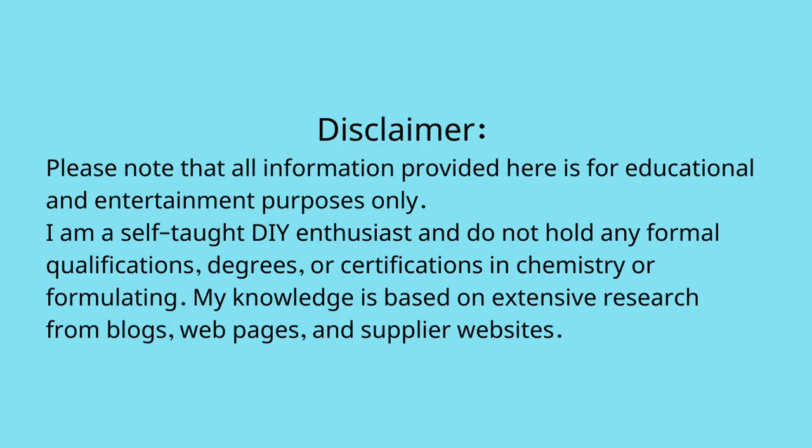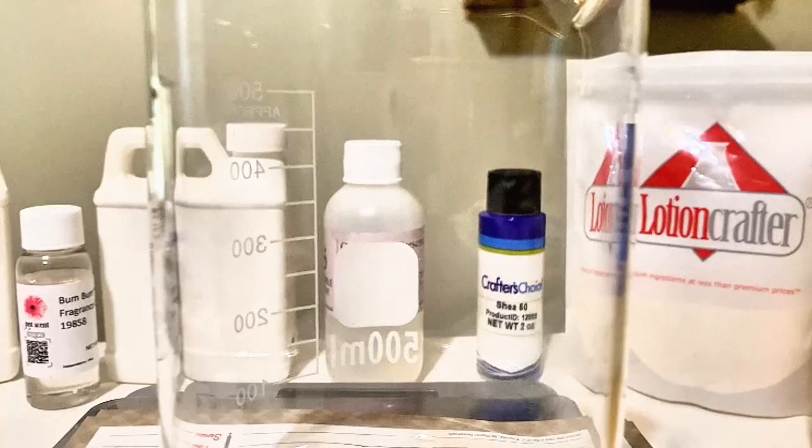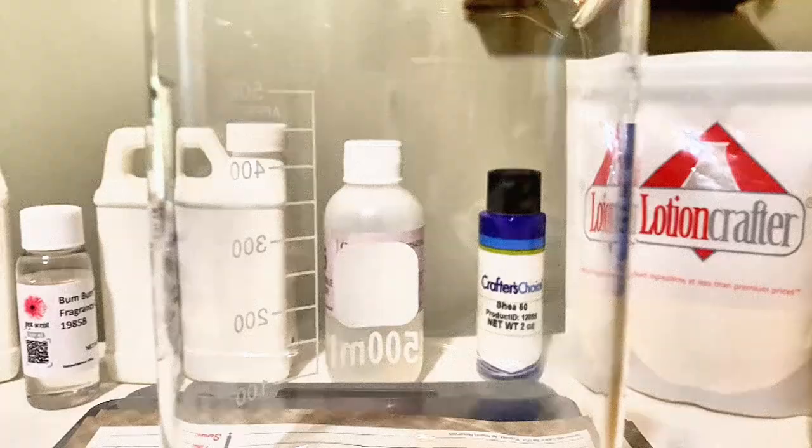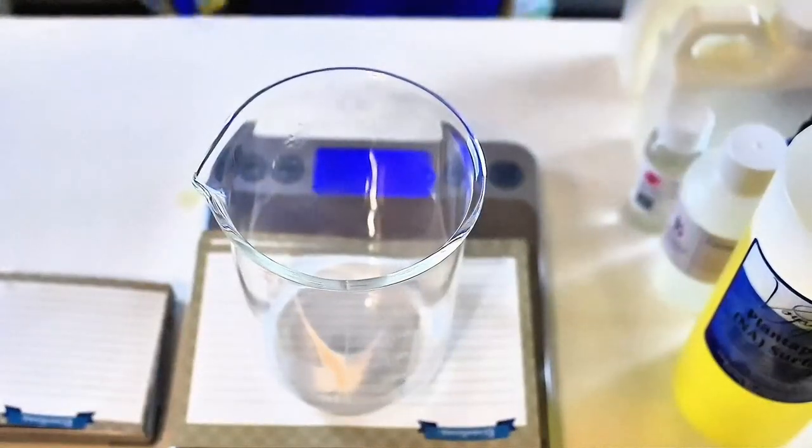I'll be making a 500-gram batch, and this is super simple to make. We're going to only have two phases, so that means you're only going to have two containers and a few little stirring utensils that you'll have to wash.